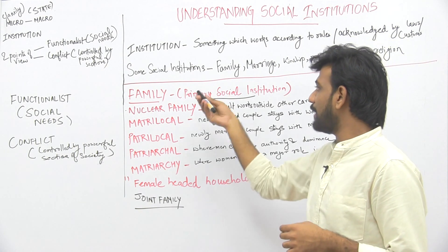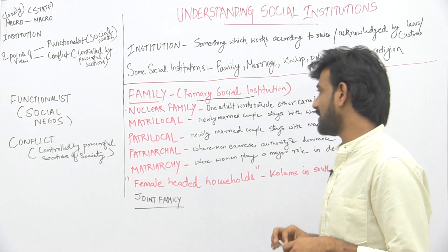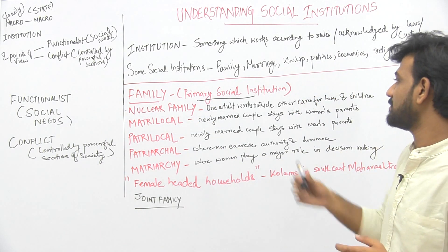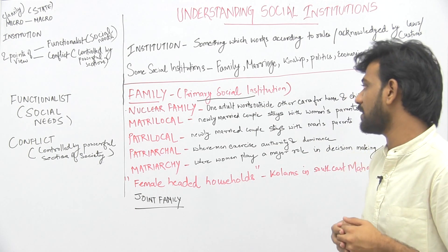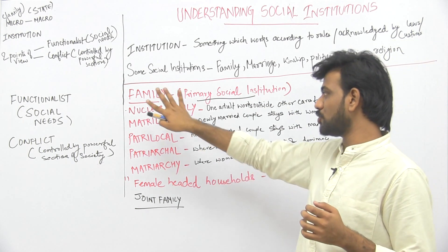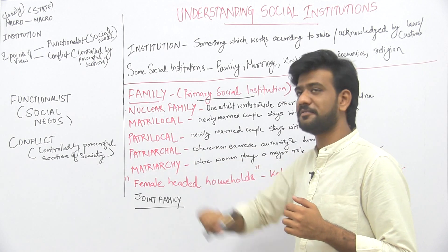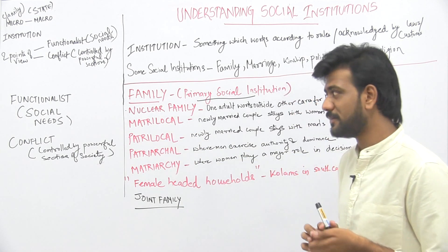We have talked about family in detail. Family is a primary social institution and comes in two kinds: nuclear family and joint family.